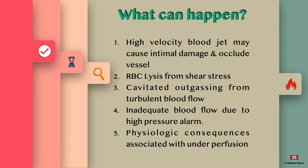What happens when we use an undersized aortic cannula? High velocity blood jet can cause intimal damage and occlude the vessels, RBC lysis due to shear stress, cavitated outgassing from turbulent blood flow, and inadequate blood flow due to high pressure alarm, along with physiologic consequences associated with under-perfusion.